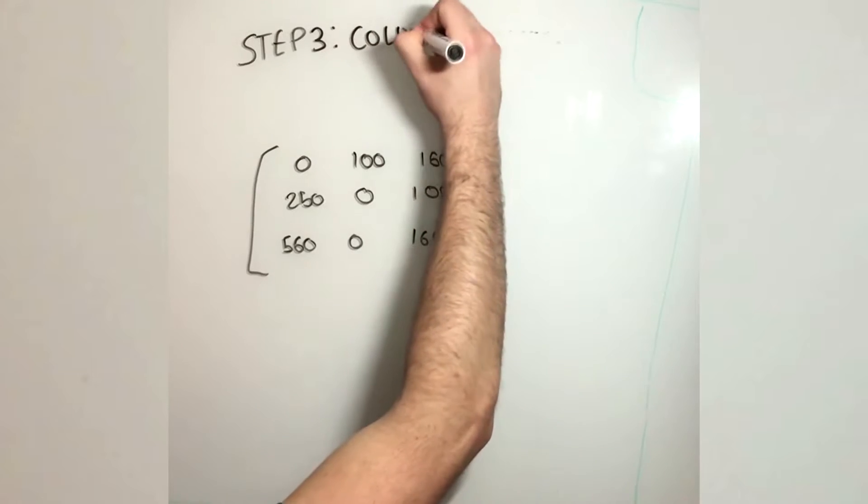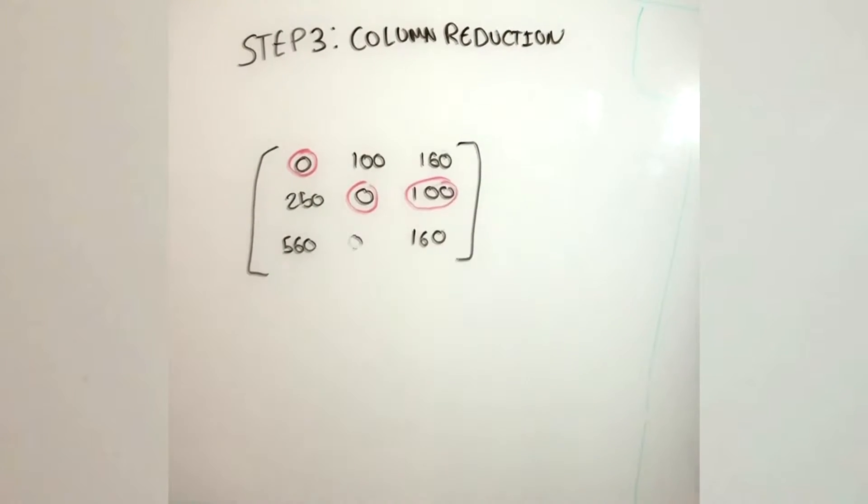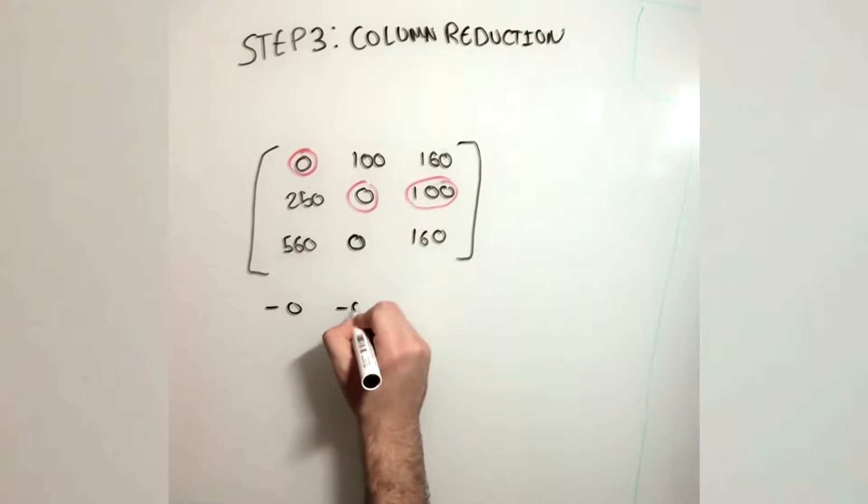Now, on to step 3. We perform column reduction. Similar to row reduction, we do the same thing with the columns by subtracting the lowest number in each column.